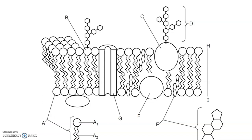A is a phospholipid. A1 is the phosphate head. A2 is the fatty acid tail. B is what we call a glycolipid. It has the phospholipid with a carbohydrate chain attached to it. This could be used to identify other cells and recognize them.